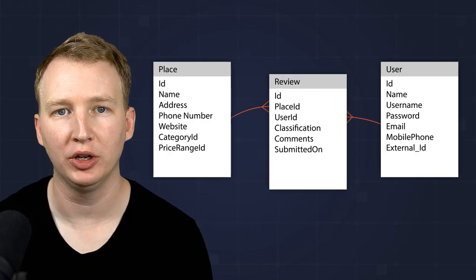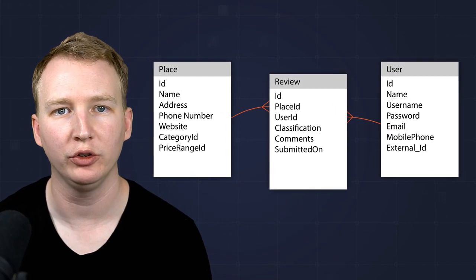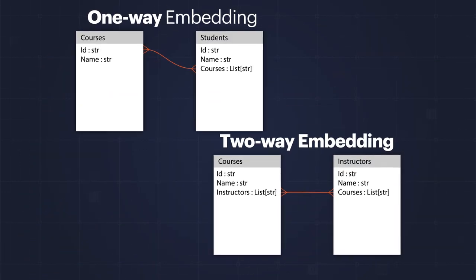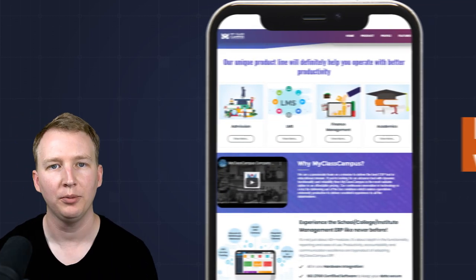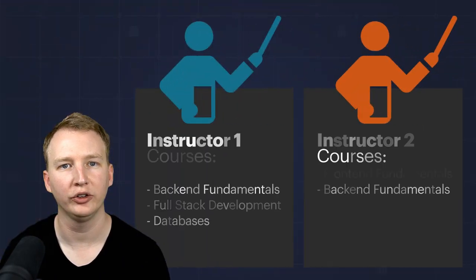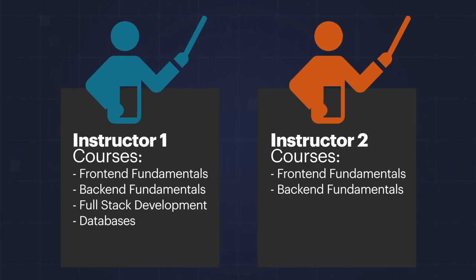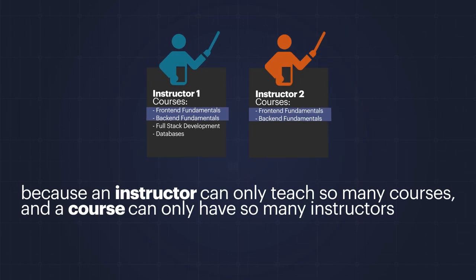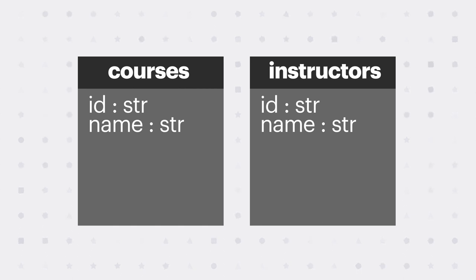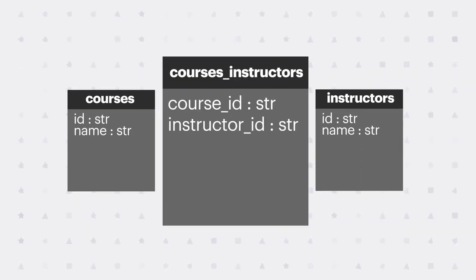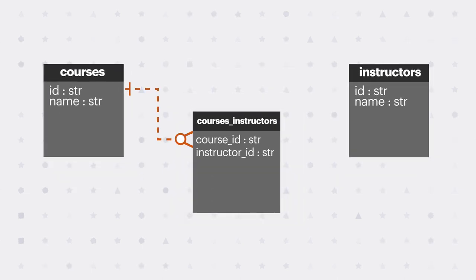Many-to-many relationships are very common and can be modeled in several different ways using NoSQL. Here are the two most common patterns. Imagine you're creating an app for an online school that has courses and instructors. There's a many-to-many relationship between instructors and courses, but it's bounded because an instructor can only teach so many courses and a course can only have so many instructors. In a relational database, you might have a table called courses and another called instructors, then a junction table called courses-instructors to store the relationship between them.